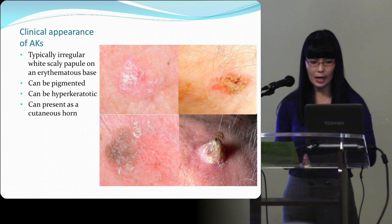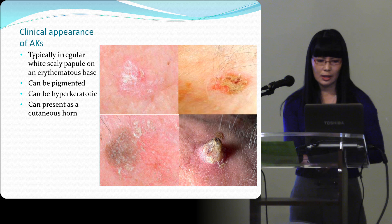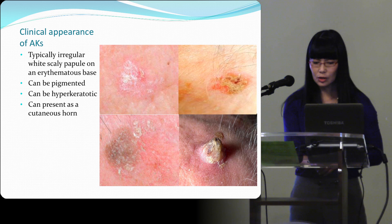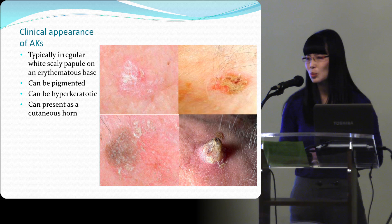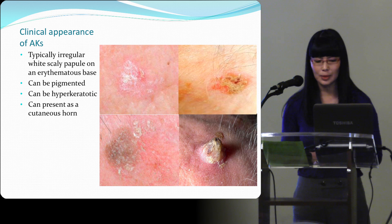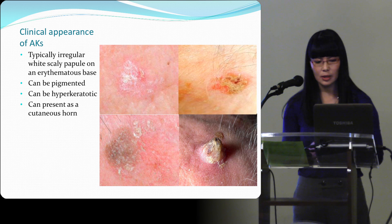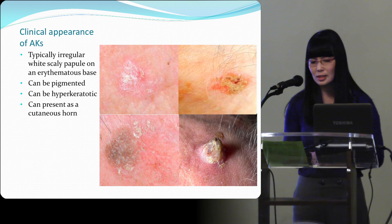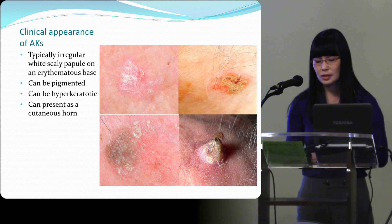The clinical appearance of AKs: typically it's an irregular scaly white papule on an erythematous base. They can be pigmented, hyperkeratotic, and can also present as a cutaneous horn. With cutaneous horns, 50% will be benign — the most common findings at the base are seborrheic keratosis or HPV. You can't know unless you take a shave biopsy, so send them all in. 50% will actually be a squamous cell cancer; some are Bowen's disease, some are AKs.